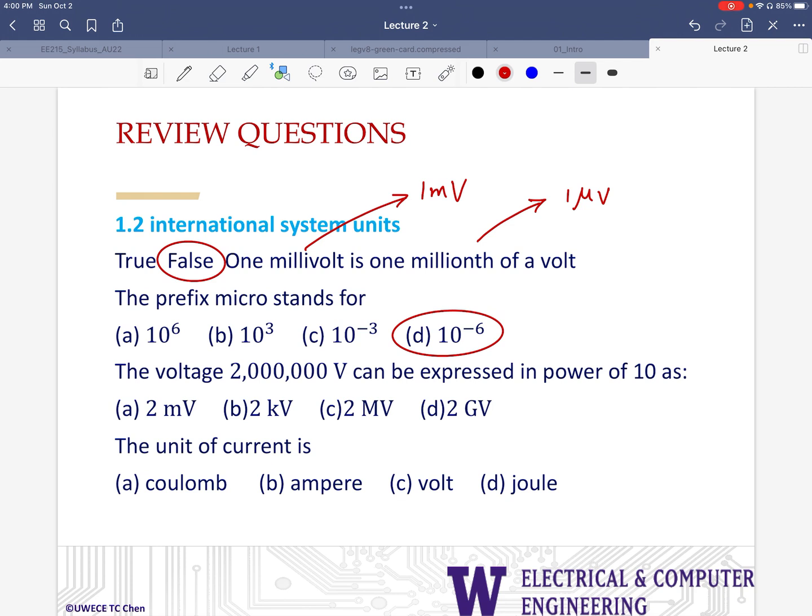Next, the voltage 2 times 10 to the 6 volts, so that's 2 megavolts, can be expressed in the power of 10 as 2 megavolts. So that's right there.